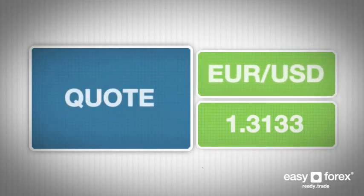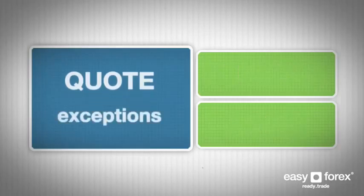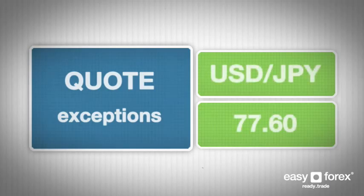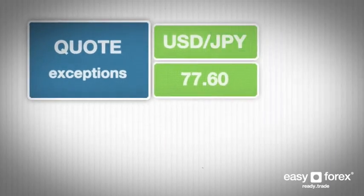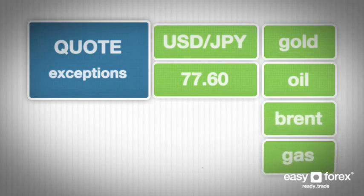When currencies are quoted, they are mainly quoted to the fourth decimal place. This is also true for silver and heating oil. Exceptions are pairs that include the Japanese yen as well as commodities such as gold, oil, Brent and gas, which are quoted to two decimal places.